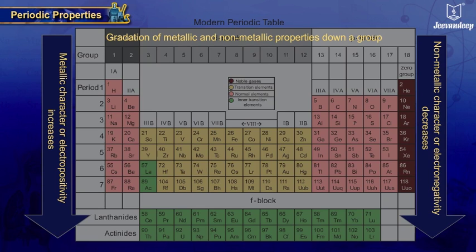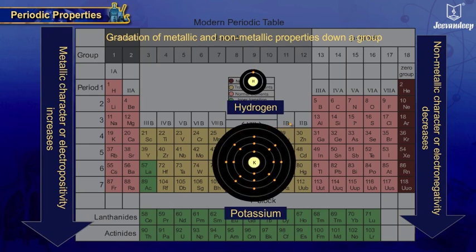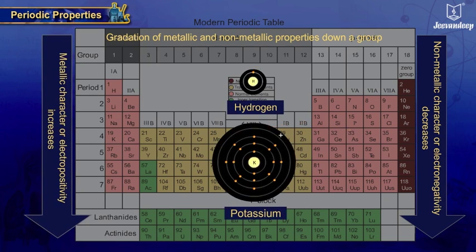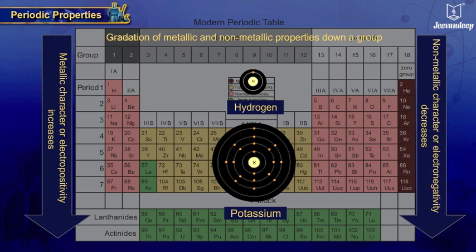i.e., tendency to lose electrons (electropositivity) increases and tendency to gain electrons (electronegativity) decreases. This happens because of increase in atomic size with the addition of shells, thus less effect of nucleus on the electrons in the outermost shell.